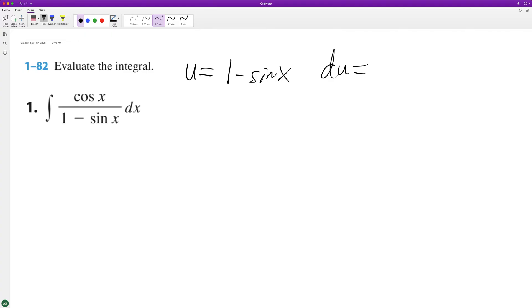And du is equal to - the derivative of sine of x is cosine, so the derivative of negative sine of x is negative cosine of x.